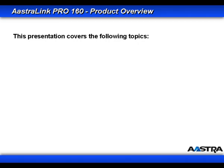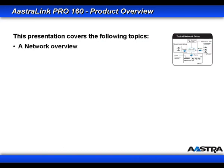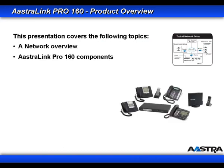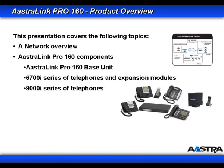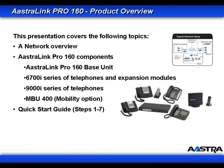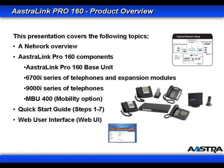This presentation covers the following topics. We'll take a quick look at a network overview. We'll look at the components that make up the Astralink Pro 160, which include the base unit, the 6700i series of phones and expansion modules, the 9000i series of telephones, and the MBU-400 which adds wireless capabilities. We'll follow the seven steps in the Quick Start Guide, and take a quick tour of the Web User Interface.